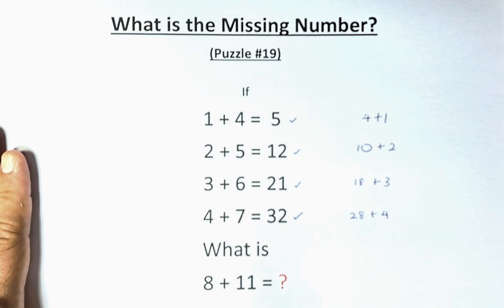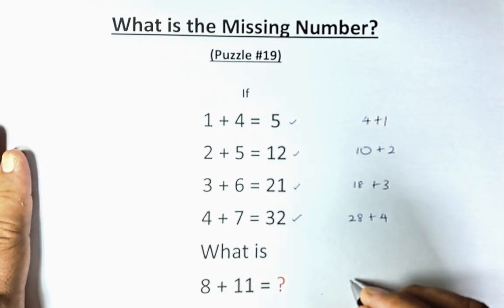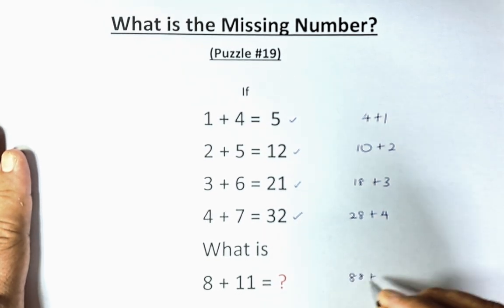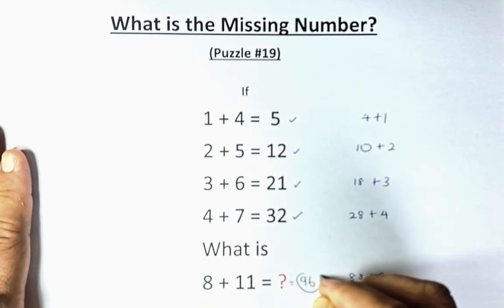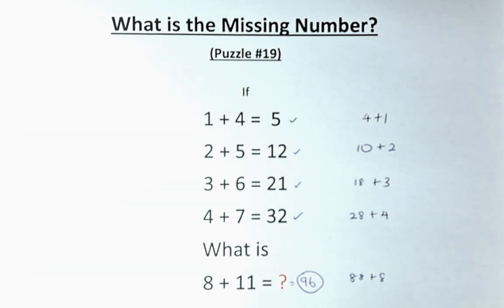So what is 8 plus 11? So 8 times 11 is going to be 88, and we're going to add 8. And the answer is going to be 96. Most of you will get the answer of 96.